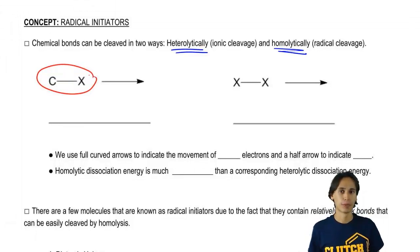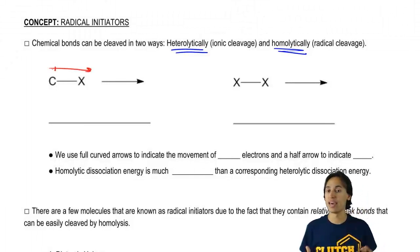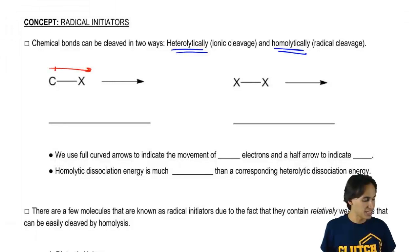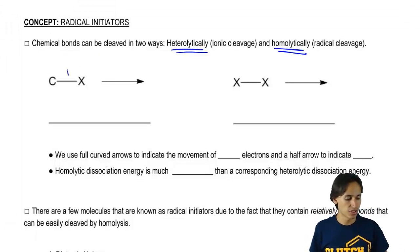The way that we would predict is that we would say the one that's the most electronegative is the one that gets the electrons when the bond breaks. So there's actually a pretty powerful dipole going towards the X depending on which halogen we're using. What we would say is that if we were to break this bond, the way we would break it is towards the X.